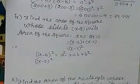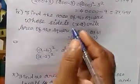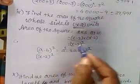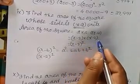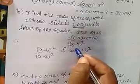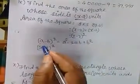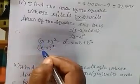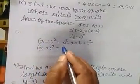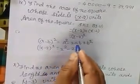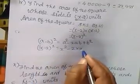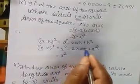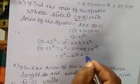Next, ninth sum: find the area of the square whose side is (x − 2) units. Area of a square = s × s. So we have (x − 2) × (x − 2) = (x − 2)². Using (a − b)² = a² − 2ab + b², where a is x and b is 2: x² − 2 × x × 2 + 2² = x² − 4x + 4.